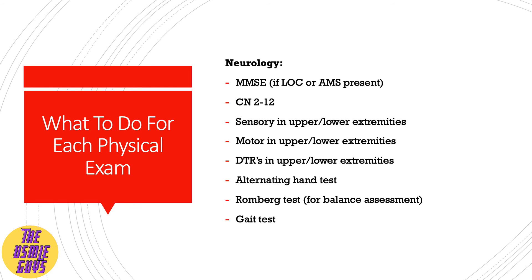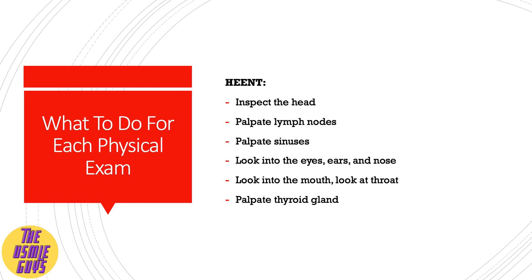For the neuro exam: if there's loss of consciousness or altered mental status, do the mini mental status exam; otherwise you don't have to. Then do cranial nerves 2 through 12, check sensation in the upper and lower extremities, check motor strength in the upper and lower extremities, do DTRs in the upper and lower extremities, do an alternating hand test, do the Romberg test to assess balance, and check the patient's gait. For HEENT: inspect the head, palpate the lymph nodes, palpate the sinuses, look into the eyes, ears, and nose, look into the mouth, look at the throat, and palpate the thyroid gland.